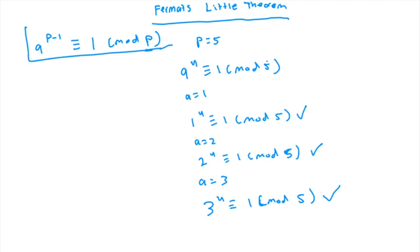Where any number a to the power of p minus 1 is congruent to 1 mod p, where p is a prime. Now the proof for this is a lot more complicated. And I won't really go over it here. But this formula is something which you should definitely keep in mind.